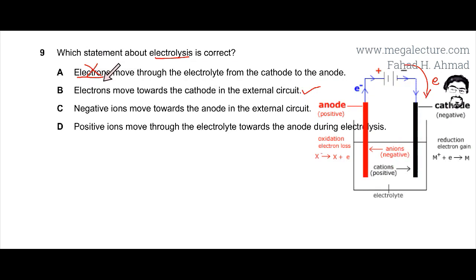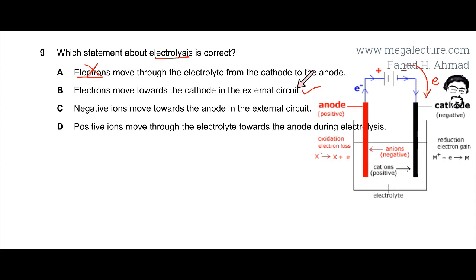Option B states that electrons move towards the cathode in the external circuit. This is definitely correct because electrons are traveling to the cathode. That statement is correct, and hopefully option B is going to be the correct answer for this question.